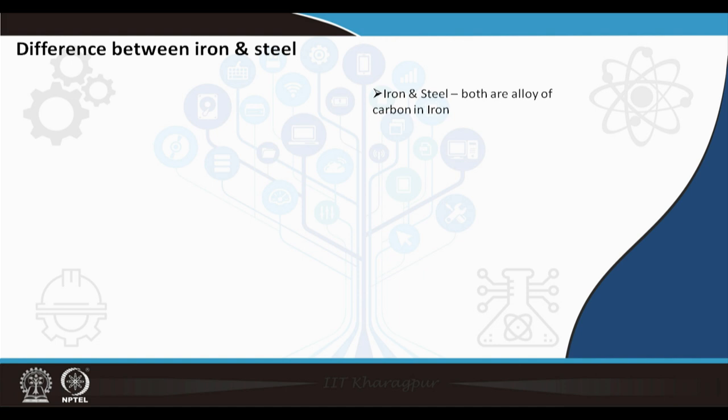The only difference between iron and steel is that in the case of steel, carbon content does not exceed 2.14%, whereas in the case of iron it is greater than 2.14% and can be up to 6.67% when the structure is totally cementite.